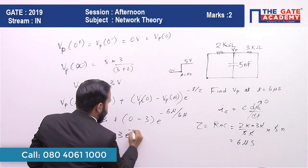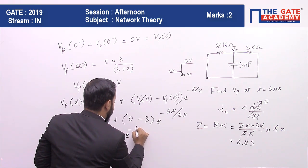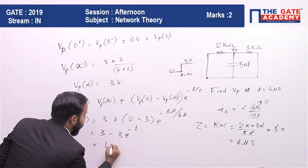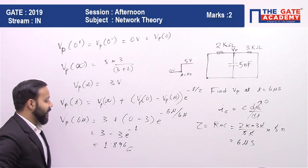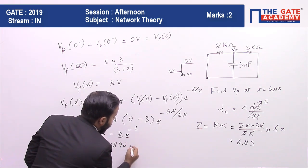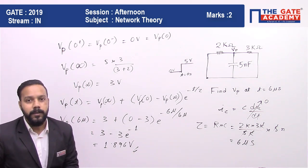And τ is also 6 microseconds. So if you solve it, you will get 3 minus 3 e to the power minus 1, which equals 1.896 up to three decimal places.